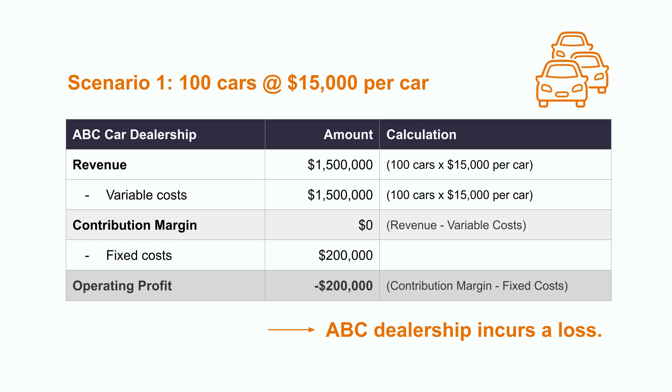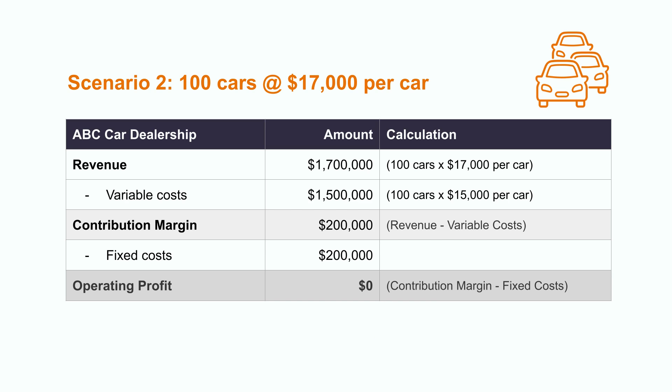If the dealership sells 100 cars at a price of $17,000, the total sales revenue will be $1,700,000. This amount will be just enough to break even, because the total contribution margin per car would only cover the fixed cost of $200,000. The total contribution margin of $200,000 would be calculated by multiplying the contribution margin per car times the number of cars sold.